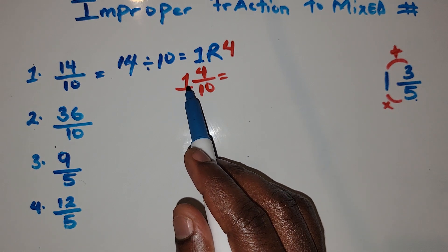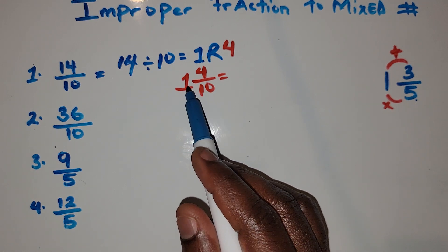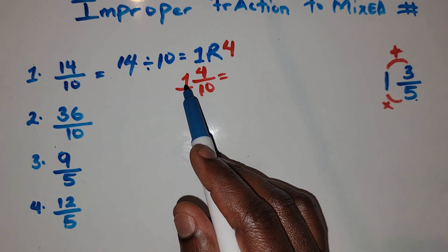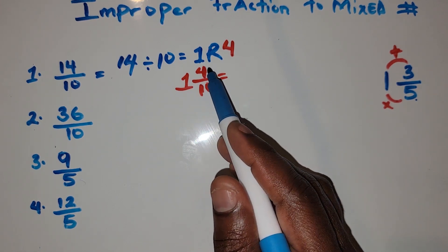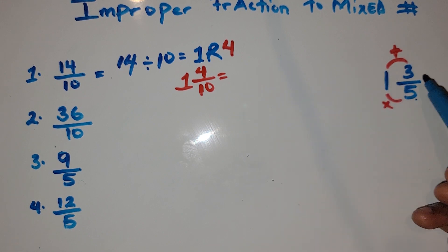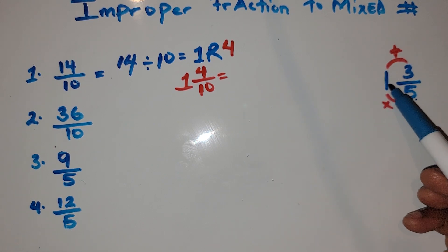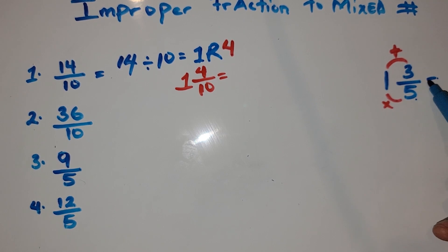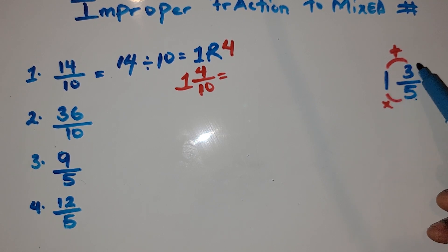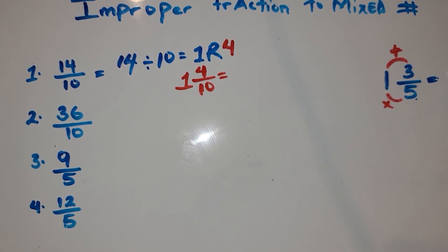To convert back from a mixed number to an improper fraction, you multiply the whole number by the denominator. In this case, 1 times 10 is 10, plus 4, which is 14. As a quick example, 1 times 5 is 5, plus 3, which gives 8 over 5.